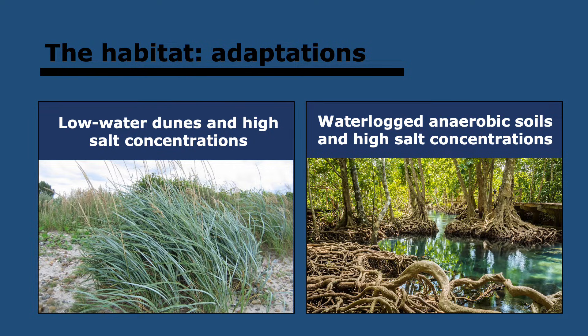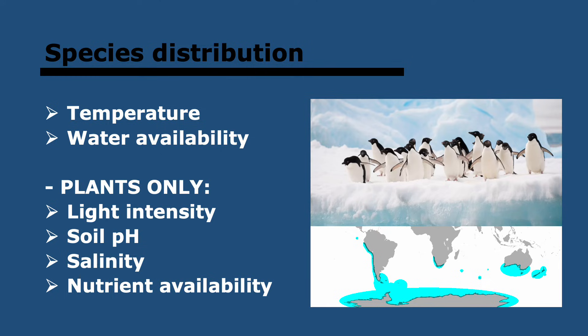So different adaptations to different habitats — that makes sense. All of these abiotic factors affect where species can live.